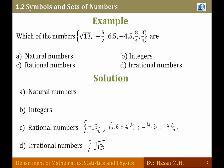8 over 4 equals 2: it is a rational number, and it is also an integer and a natural number.